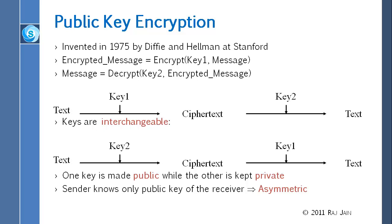Therefore one key you can make public — anybody can encrypt and send a message to you, but they cannot decrypt it, because the other key you keep private. The sender only knows the public key, and therefore this is asymmetric. Previously, both the sender and the receiver knew the same secret key — that was called symmetric. This one is asymmetric because the sender doesn't know what key you are using for decryption.